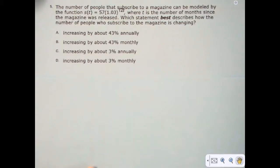The number of people that subscribe to a magazine can be modeled by the function S of T equals 57 times 1.3 to the 12T power, where T is the number of months since the magazine was released. Which statement best describes how the number of people who subscribe to the magazine is changing?